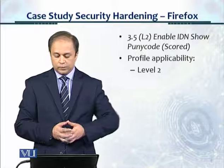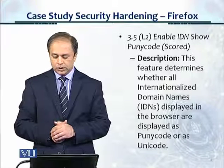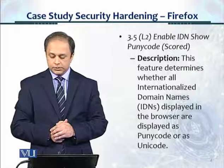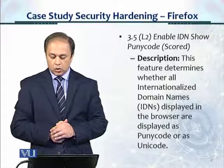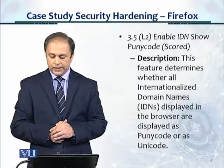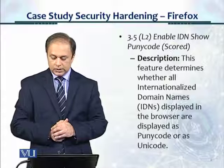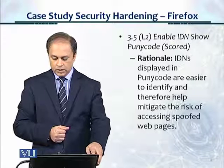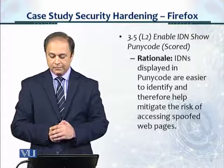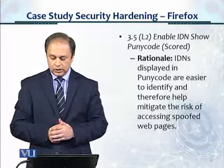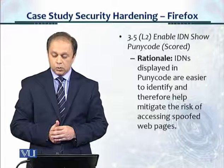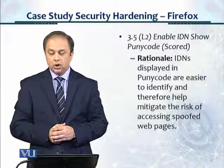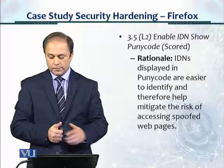This is a level 2 profile applicability. In the description, the control tells us this feature determines whether all internationalized domain names (IDNs) displayed in the browser are displayed as punycode or as Unicode. IDNs displayed in punycode — and this is the rationale section — are easier to identify and therefore help mitigate the risk of accessing spoofed web pages.